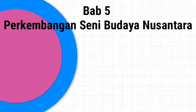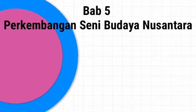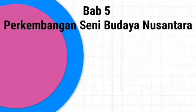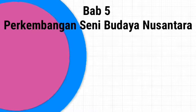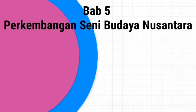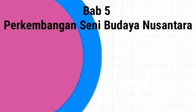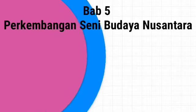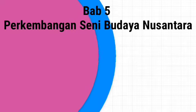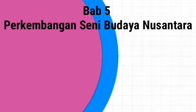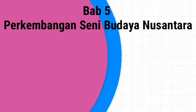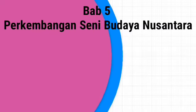Bab 5: Perkembangan Seni Budaya Nusantara. Pada perkembangannya, seni budaya nusantara dibagi menjadi tiga, yakni seni nusantara tradisional, seni nusantara era kemerdekaan, dan seni nusantara era digital.